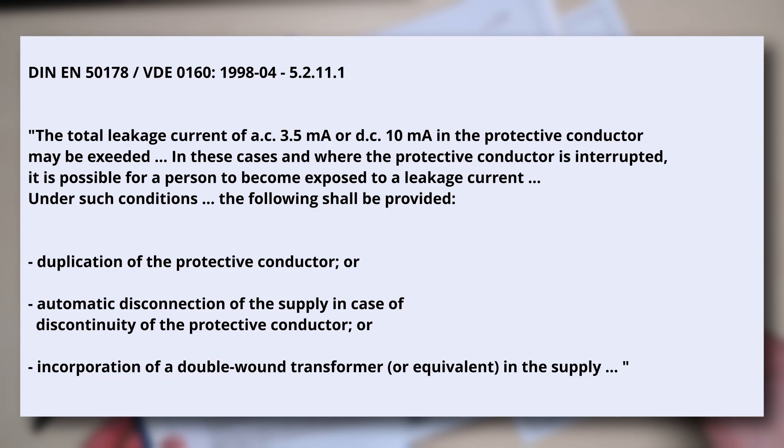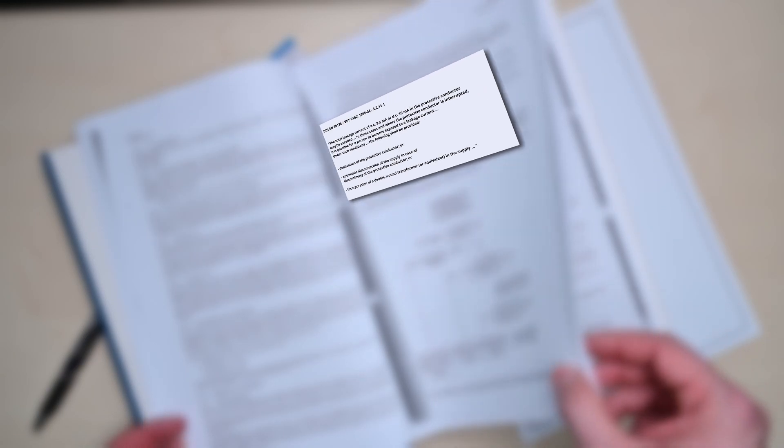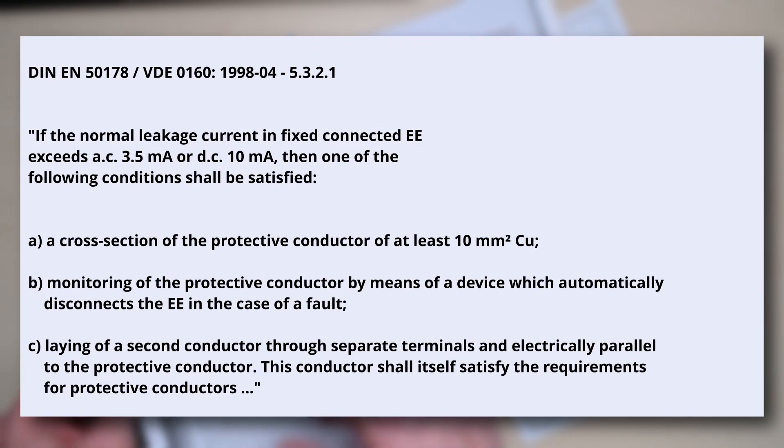Or incorporation of a double wound transformer or equivalent in the supply. Later in section 5.3.2.1 it further states: if the normal leakage current in fixed connected EE exceeds AC 3.5 milliamps or DC 10 milliamps, then one of the following conditions shall be satisfied.